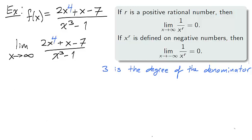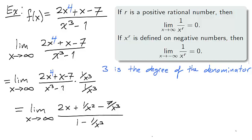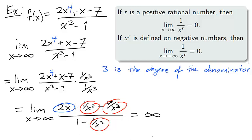If we take the same example but alter the numerator to 2x⁴ + x − 7, so the numerator has degree 4, we calculate the limit as x approaches infinity the same way — multiplying numerator and denominator by 1 over x cubed, since 3 is the degree of the denominator. The expressions circled in red approach 0, while the expression circled in blue approaches infinity as x approaches infinity. So the denominator approaches 1 while the numerator is unbounded, and therefore the limit is infinity — no horizontal asymptote.